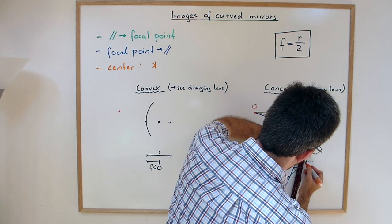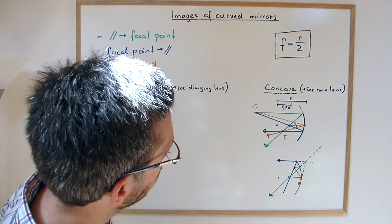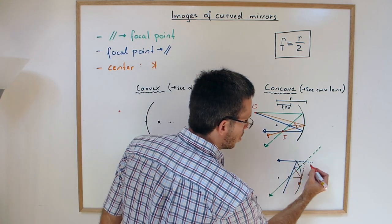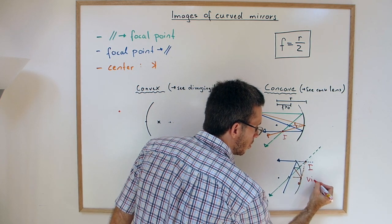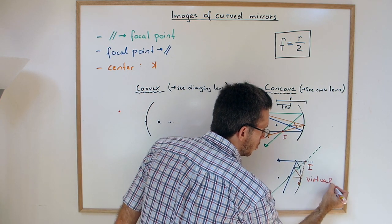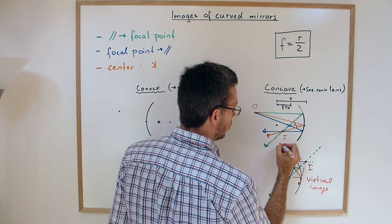If I backtrack, I meet at the same location, which is my virtual image. And here I have the real image.